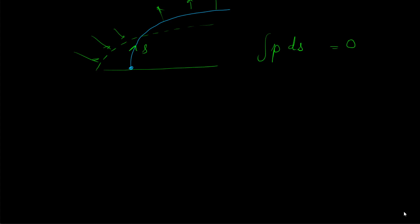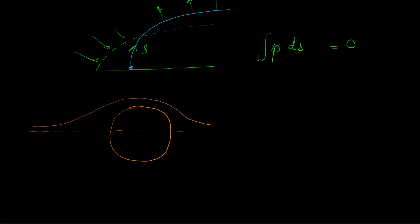Next we move on to a very useful flow superposition: flow past a circle, or a cylinder with infinite length. This is the cylinder and we want to analyze the flow over it. Remember we are studying ideal flows where there is no viscosity. In the presence of viscosity there will be viscous stresses, but in the absence of viscosity there will be a slip velocity at the surface.